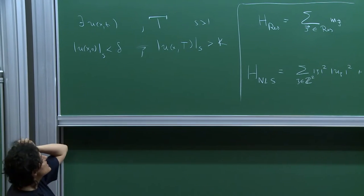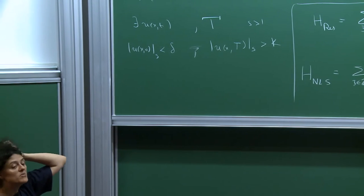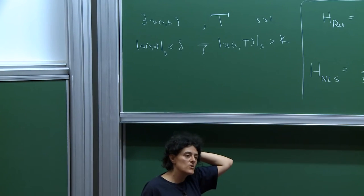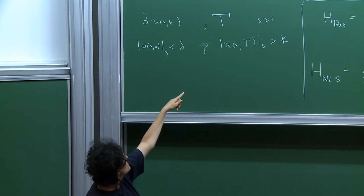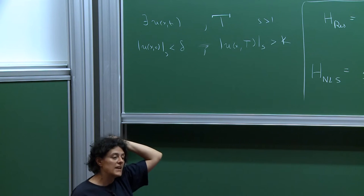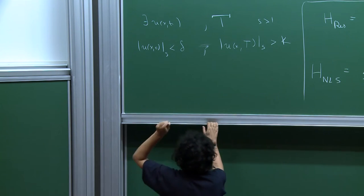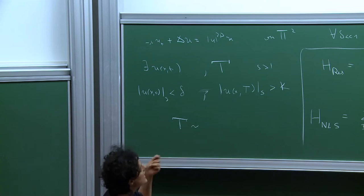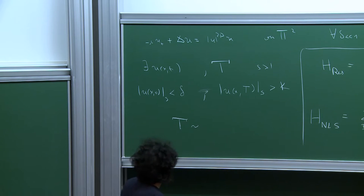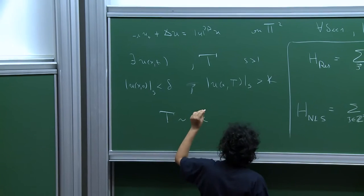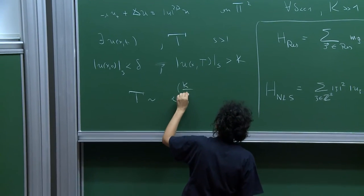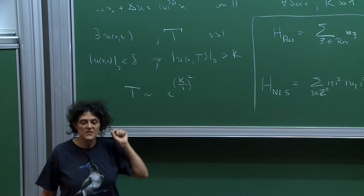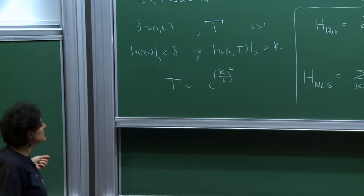Let me remind you that this result for the cubic NLS was proved by the I-team. There is also a result giving estimates on the time T by Kaloschen and Guardia. We also get a time estimate for any NLS, but the estimate is extremely bad — it is like some power K to delta to some other power — a very long time.